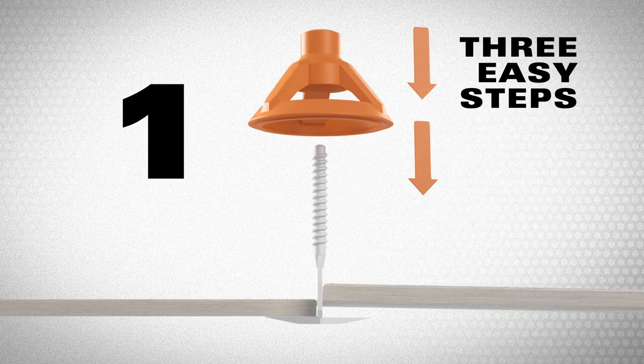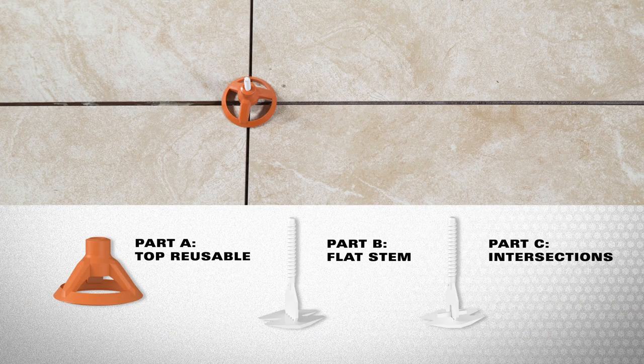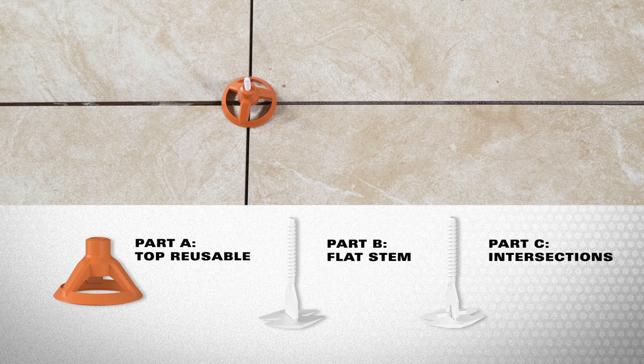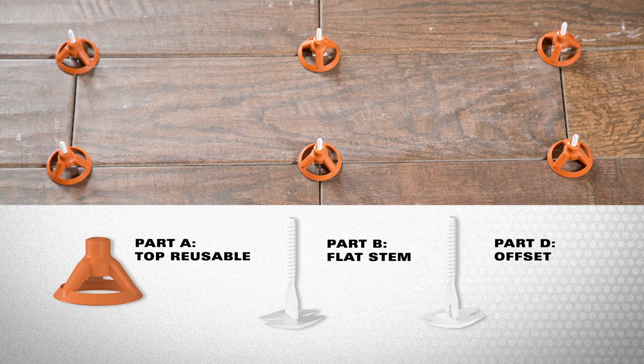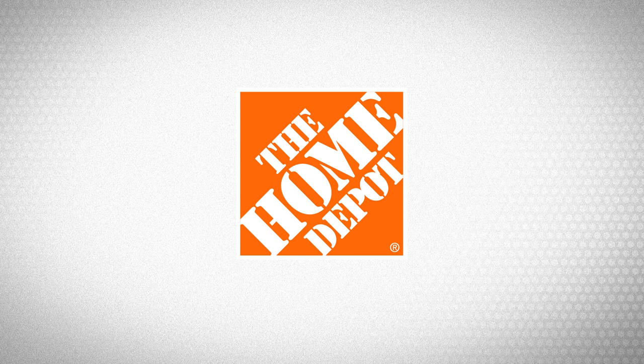For anti-lippage that is truly as easy as 1-2-3, start with the top, Part A, the flat stem, Part B, and either Part C for intersections or Part D for offsets. Available at The Home Depot or online at homedepot.com.